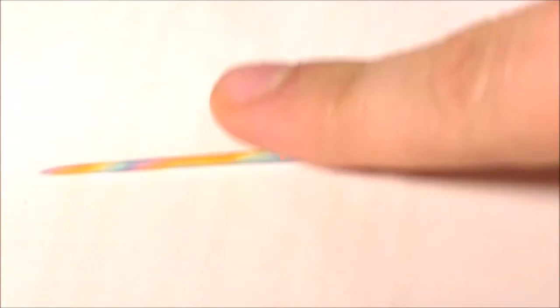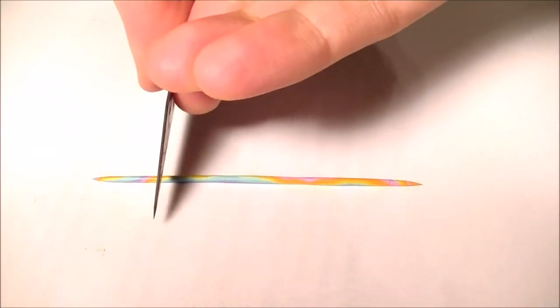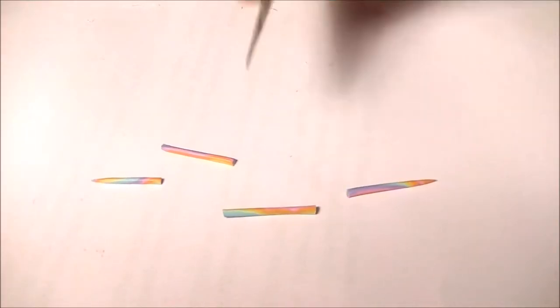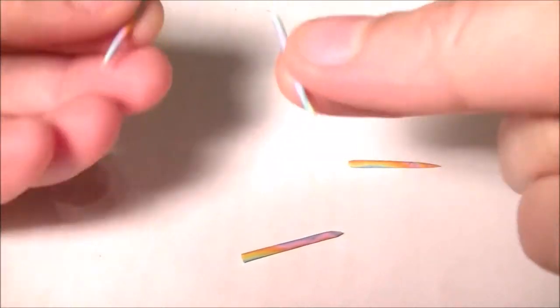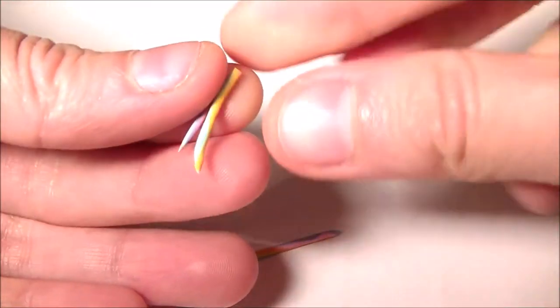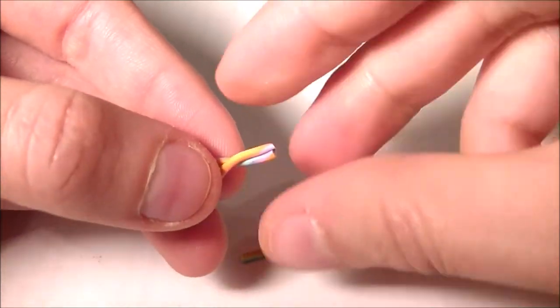Now you're gonna roll out a snake of the clay and cut that into four or five pieces. We're going to need to taper the ends of each clay piece. These are the tentacles of your jellyfish and will need to be grouped together.